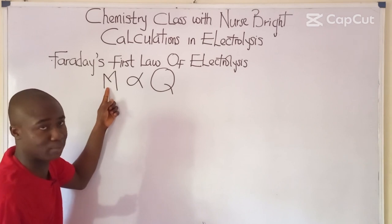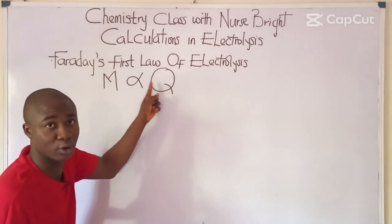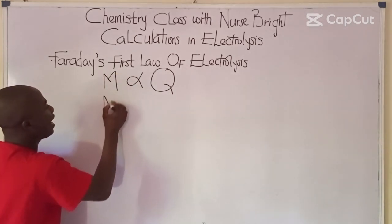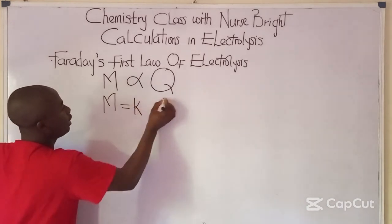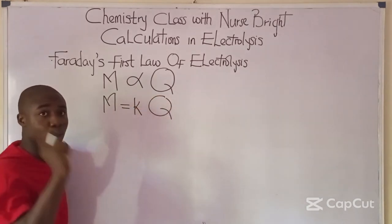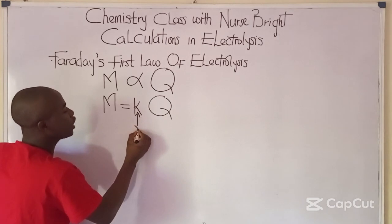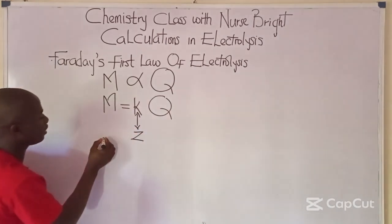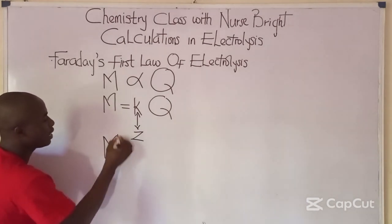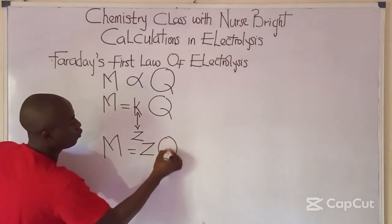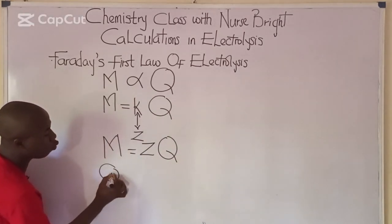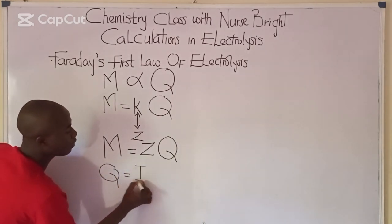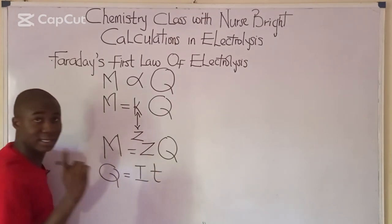Mass is denoted with the symbol M and quantity of electricity is denoted with the symbol Q. Introducing a constant, we have M = KQ, whereby K is changed to the symbol Z. So we have mass equal to ZQ, whereby Q — the quantity of electricity — is given by the formula Q = IT.